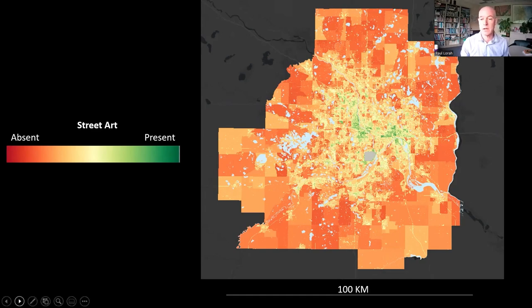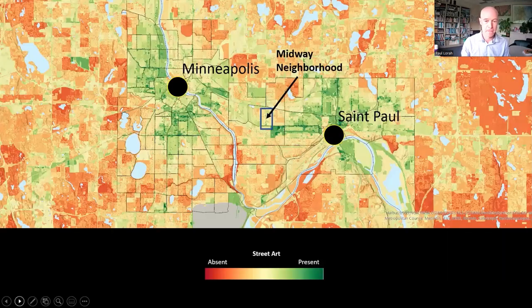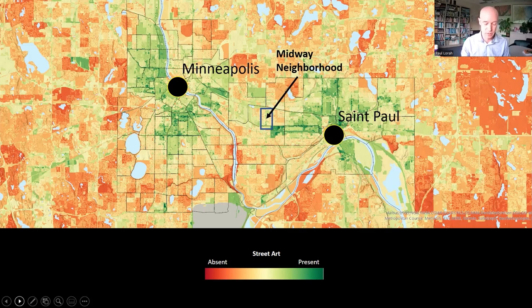In just a second we'll zoom in to the downtowns for a more detailed look. This is the view of the neighborhoods closer to downtown St. Paul and Minneapolis. You can also see the location of the Midway neighborhood where we conducted our field work. Basically, we walked around one neighborhood, got insights about street art, and extrapolated to the whole city — so this is where we estimate hotspots are going to be.